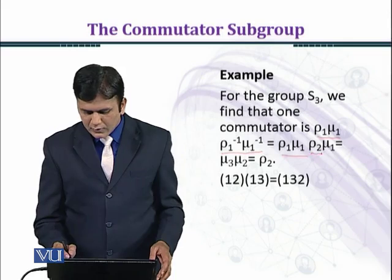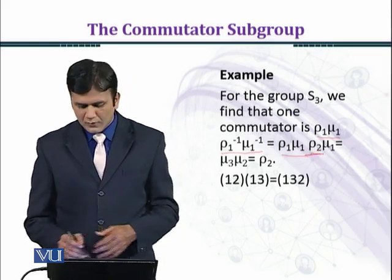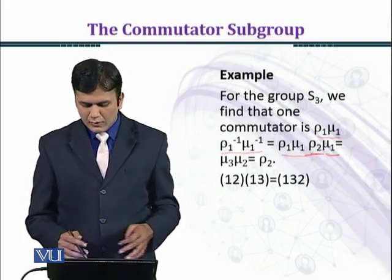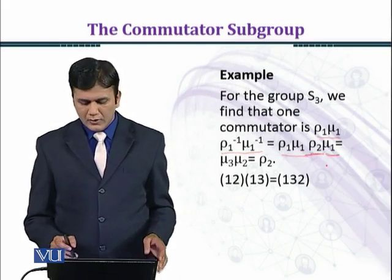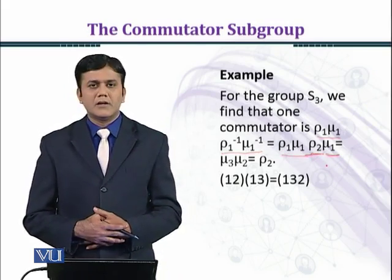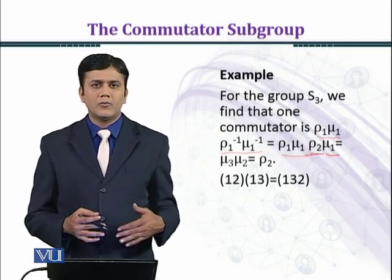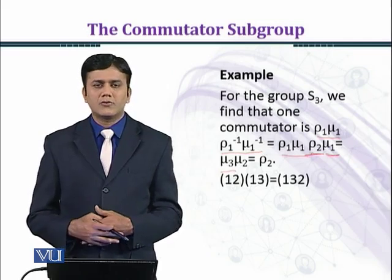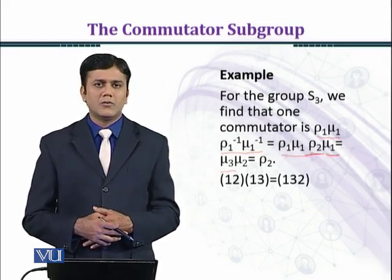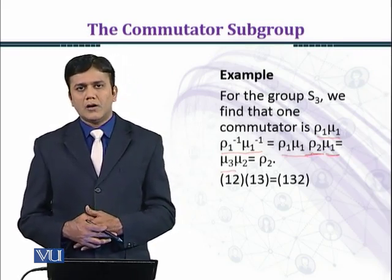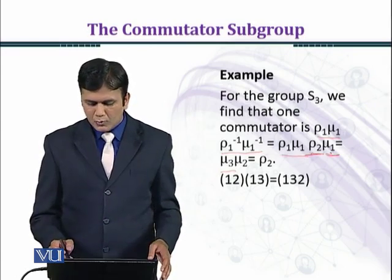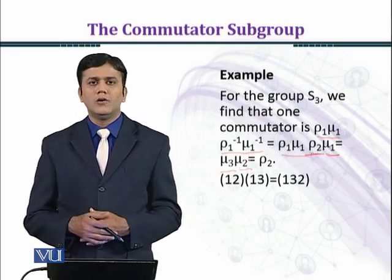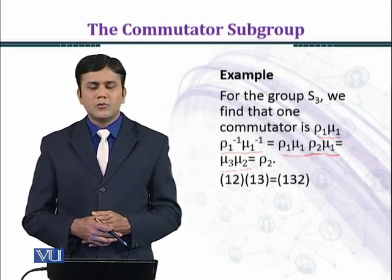So rho1_inverse is rho2 and mu1_inverse is mu1. The product becomes rho1 * mu1 * rho2 * mu1. Working through the multiplication from right to left, the result is rho2. When we multiply mu3 with mu2 we get rho2.